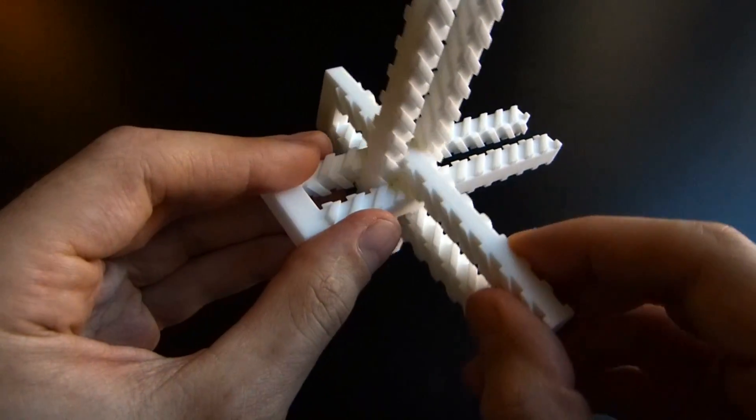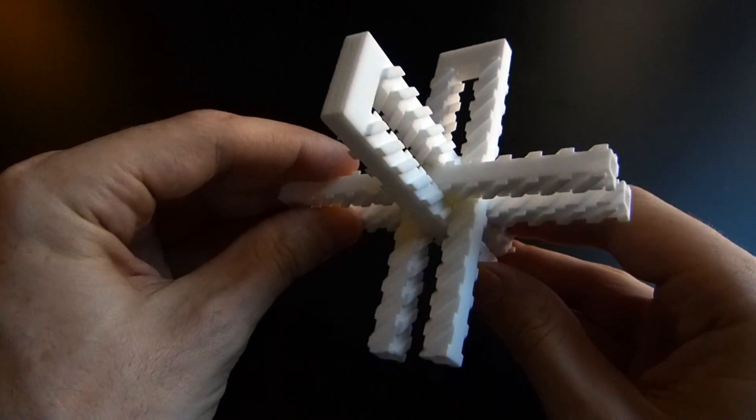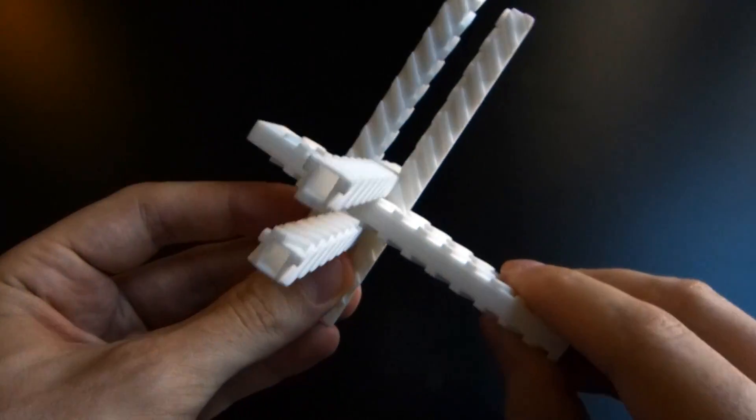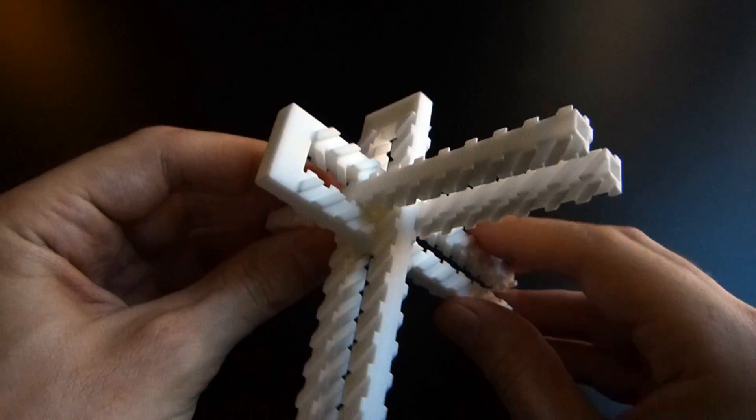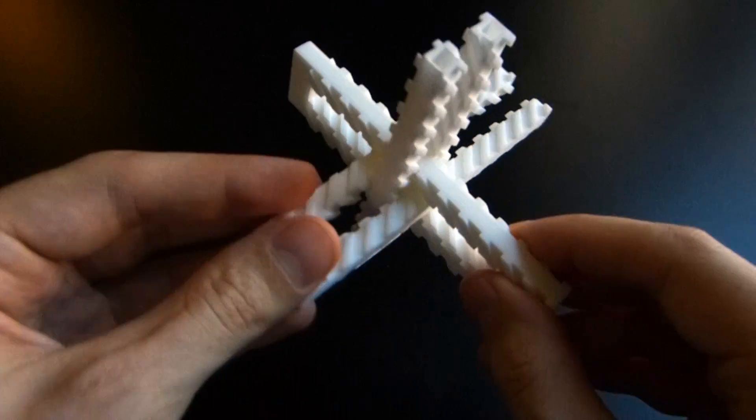So this is closely related to our triple gear, in that there are three separate pieces that can move against each other, but you have to move all three of them at once. You can't just move one on its own. They're kind of interlocked.